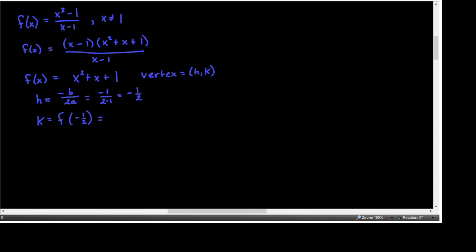So h = −1/(2·1) = −1/2. Then to find the y-coordinate, we substitute that x value in: (−1/2)² + (−1/2) + 1 = 1/4 − 1/4... I believe that's 3/4. So the vertex is at (−1/2, 3/4), assuming I haven't made any silly arithmetic errors.